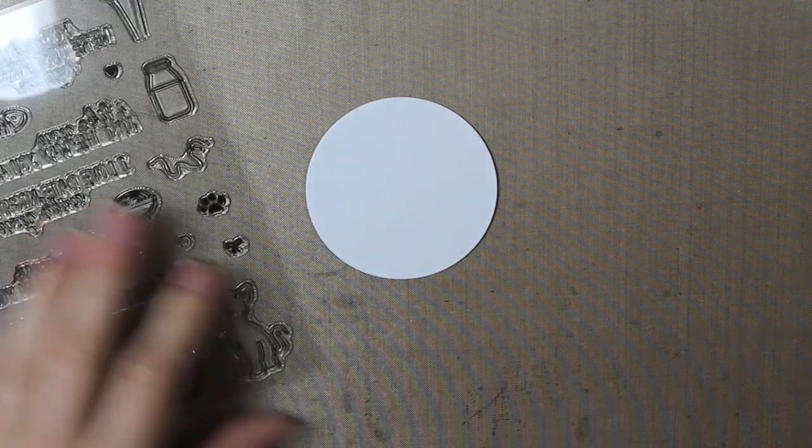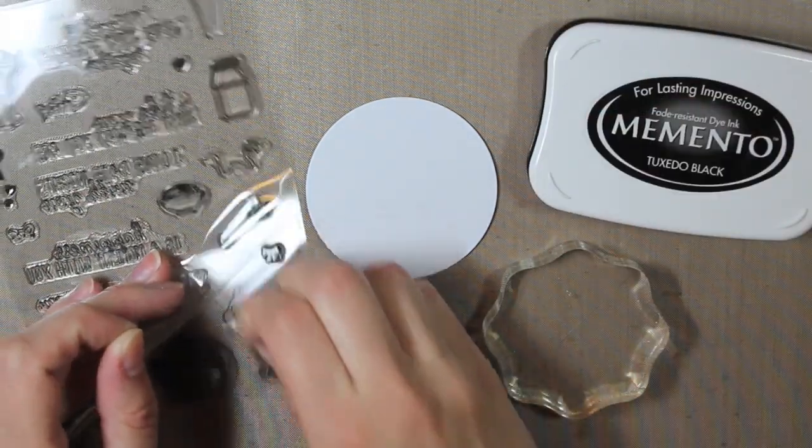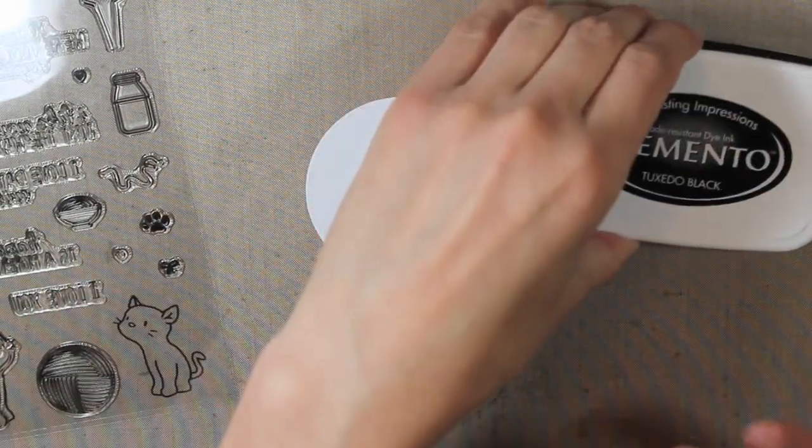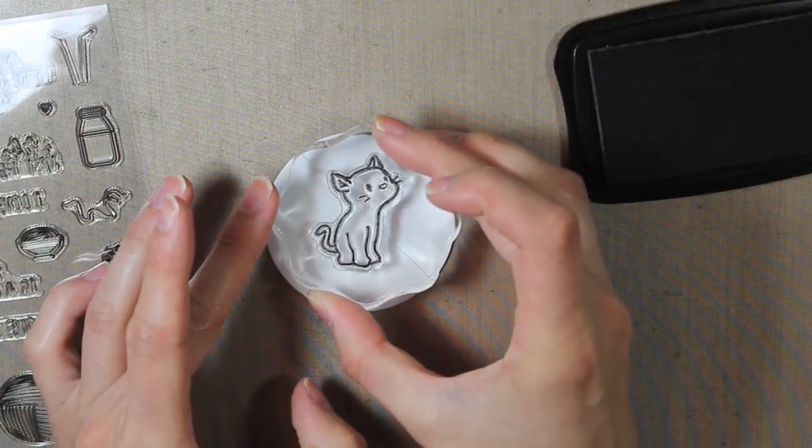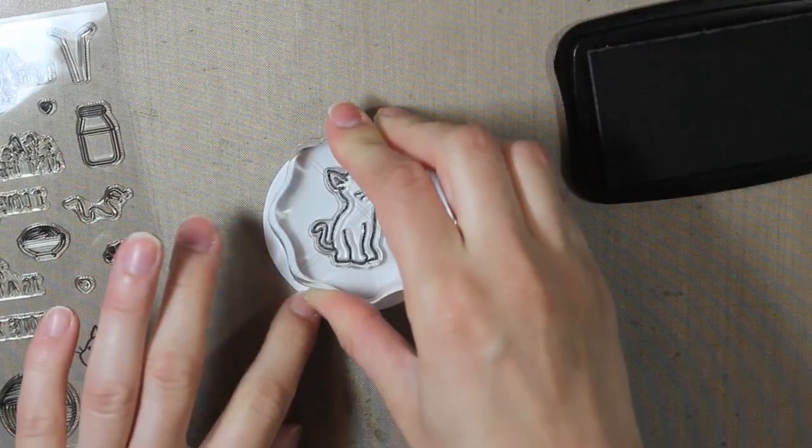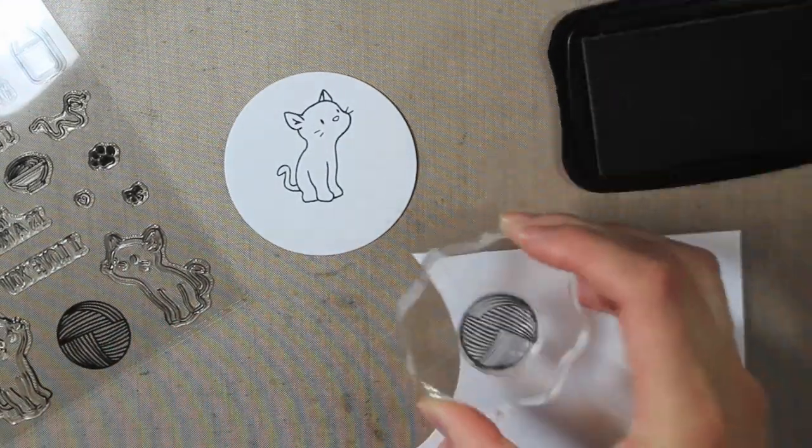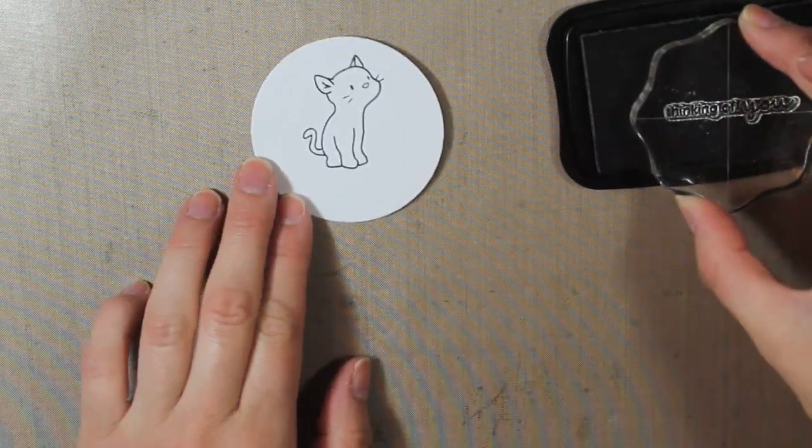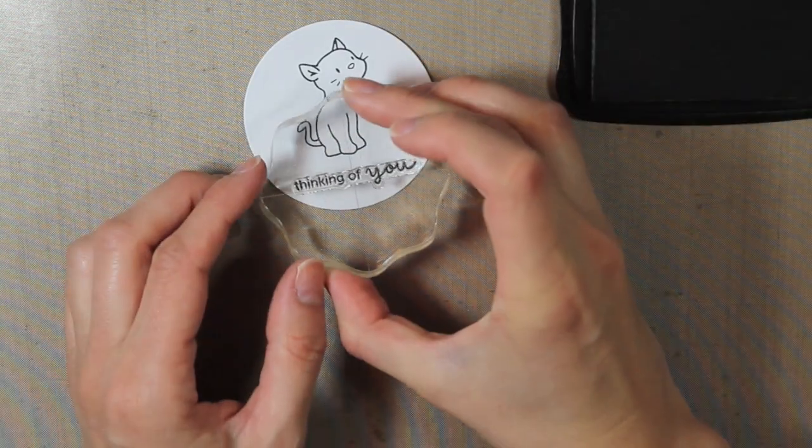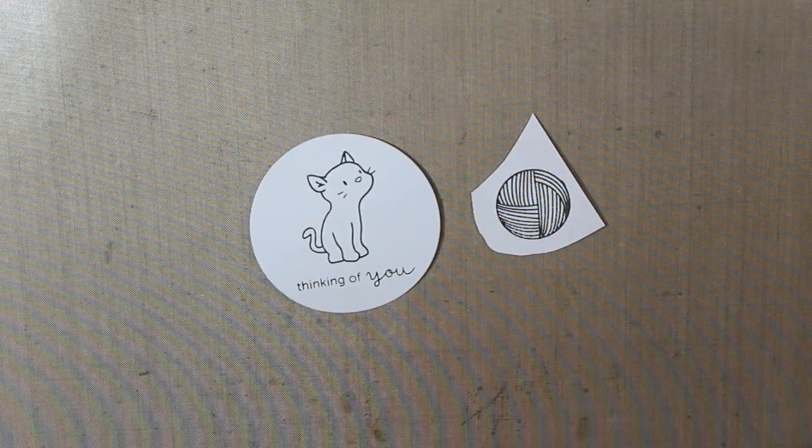But the image I'm using on this card is from Mama Elephant. It's this cute little kitty. And I'm going to stamp that onto my cardstock with the Tuxedo Black Memento ink. I'm just going to stamp that down right in the center. And then while I have this set out, I'm also going to stamp the little yarn ball on some more Coordinations 110 pound cardstock. And then I'm also going to use a different Mama Elephant set for the sentiment. It says Thinking of You. And I will have all the supplies that I used linked down below if you are interested in any of them.